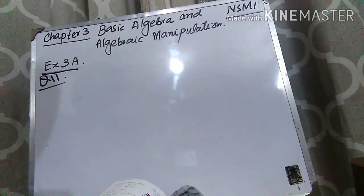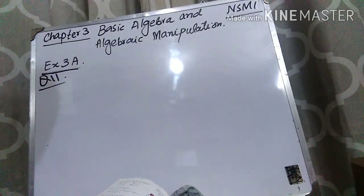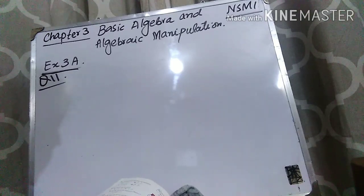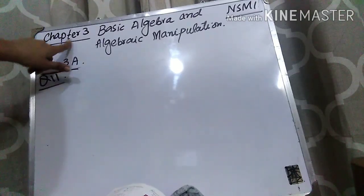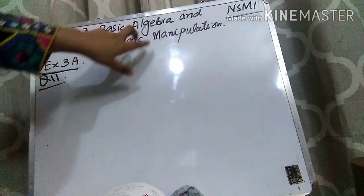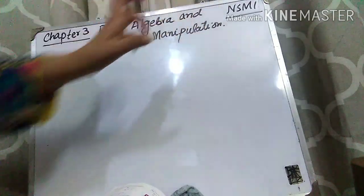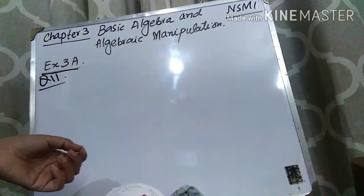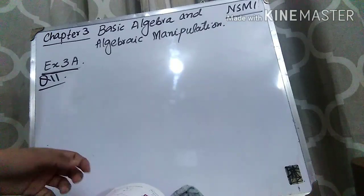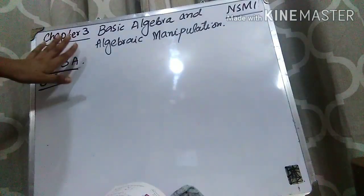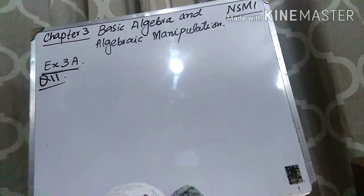Assalamualaikum students, how are you all? I hope that you all are fine. Welcome to your channel Maths D1D2 Scientific Academy. Today our lecture is related to Chapter 3 Basic Algebra and Algebraic Manipulation. Your book is Neoselipus Mathematics 1 — in the new book it's Chapter 3, but in the old book it's Chapter 4.